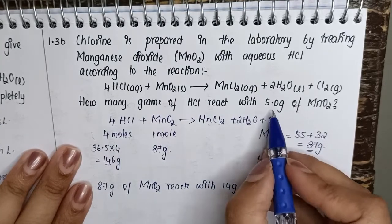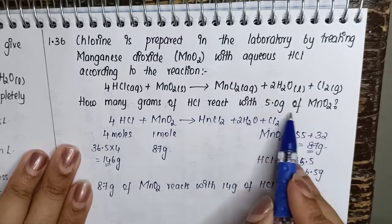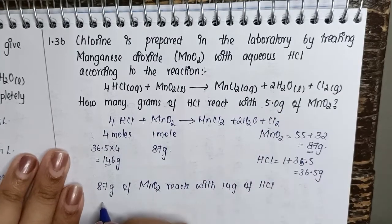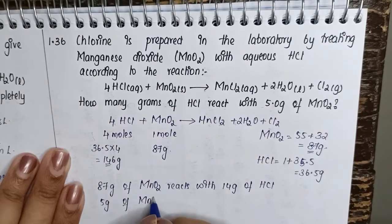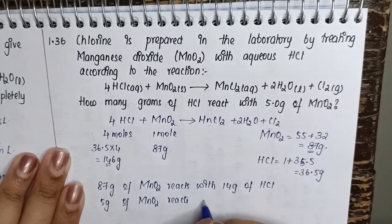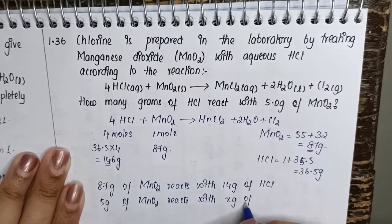Therefore, as per the question it says how many grams of HCl will react with 5 grams of MnO2. So here we can write 5 grams of MnO2 reacts with x grams of HCl.